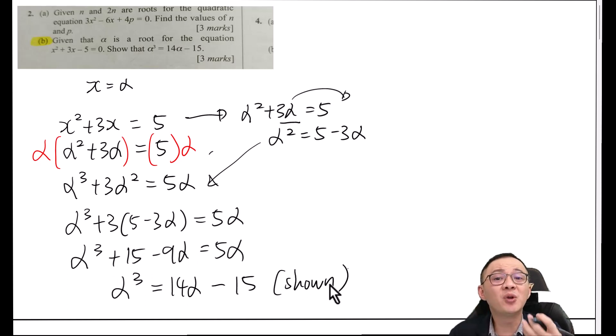So for this kind of question, the only tricky part I would say is this one. You need to get the idea to multiply alpha for both sides of your equation. If you can understand this, then this three mark question shouldn't be too hard for you. I hope you find this video helpful. I will see you guys in the next video. Bye-bye.